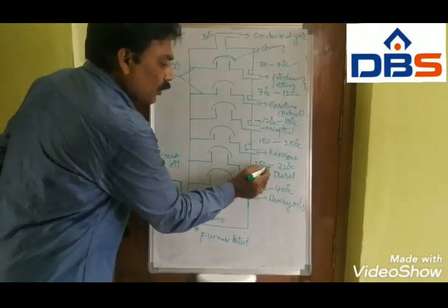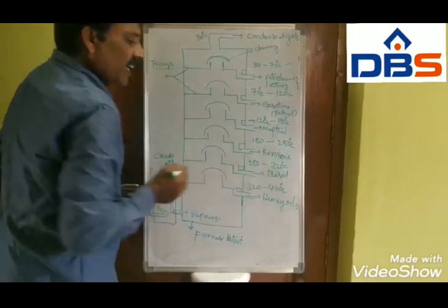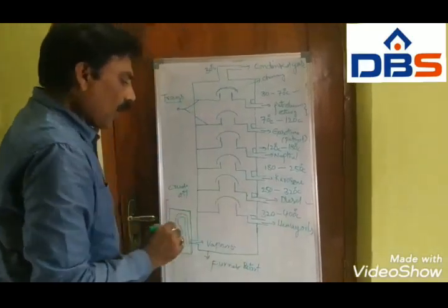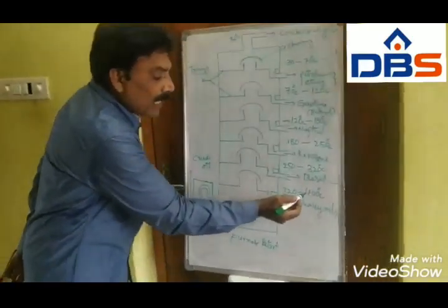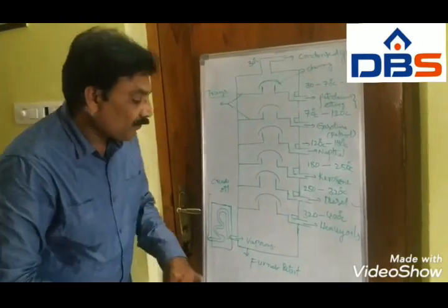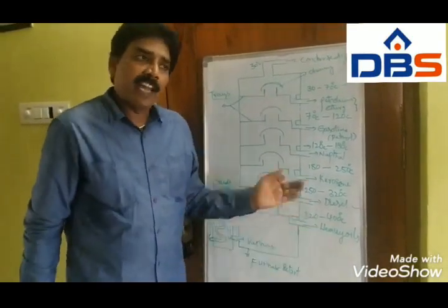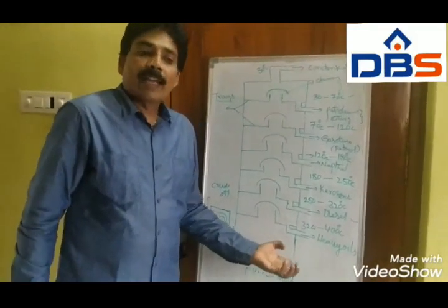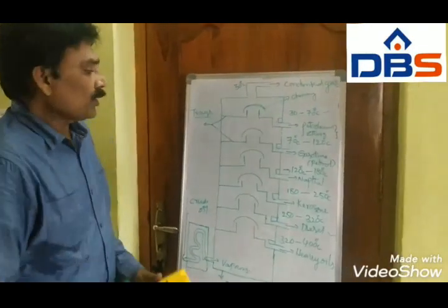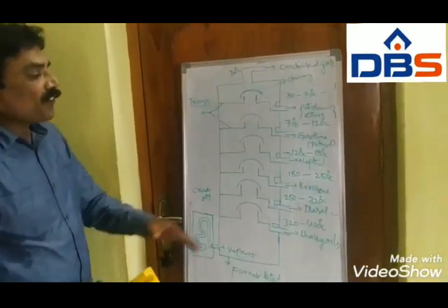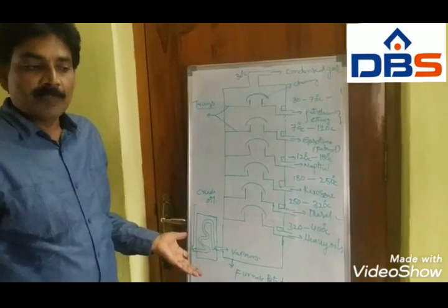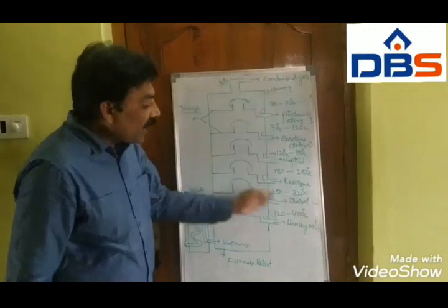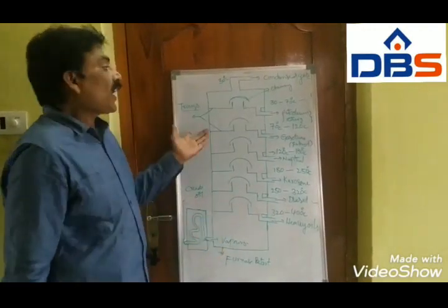From 250 to 320 degrees centigrade, oil is released. From 320 to 400 degrees centigrade, heavy oils are released. These are the different oils obtained from fractional distillation of petroleum.